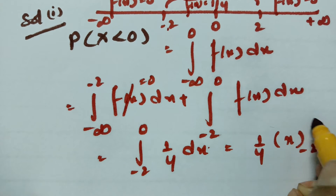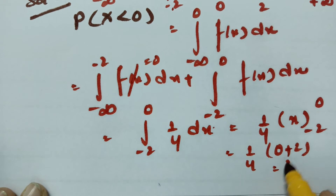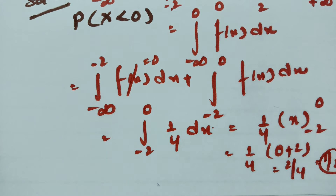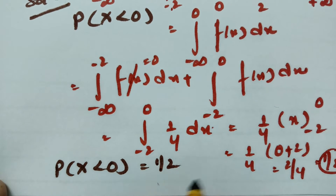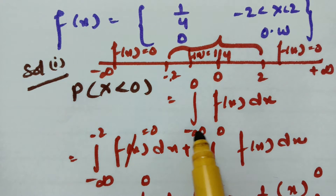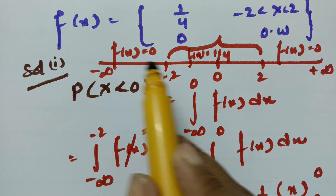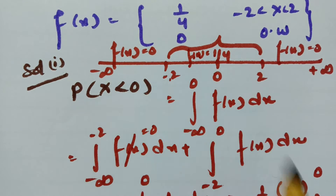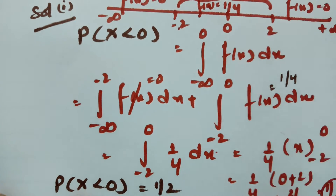Integral dx is x between the limits minus 2 to 0. So this is 0 upper limit minus of minus 2, which will be 2 by 4, and finally the value is half. Therefore, we got the probability of x less than 0 value is equal to half. I split into two integrals: minus infinity to minus 2 and minus 2 to 0. From minus 2 to 0 the value is 1 by 4, so I got the value as half.